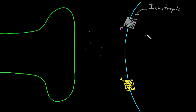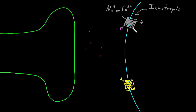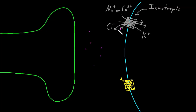The target cell will usually be excited if the activated ionotropic neurotransmitter receptor allows sodium or calcium ions to pass, because they will usually flow into the neuron, bringing their positive charges in and causing depolarization. Or the ionotropic neurotransmitter receptor will usually cause inhibition of the target cell if it allows chloride or potassium ions to pass. Chloride ions will usually flow into the neuron, bringing negative charges in and making it more negative inside. Potassium ions will usually flow out of the neuron, carrying their positive charges outside and also making it more negative inside.